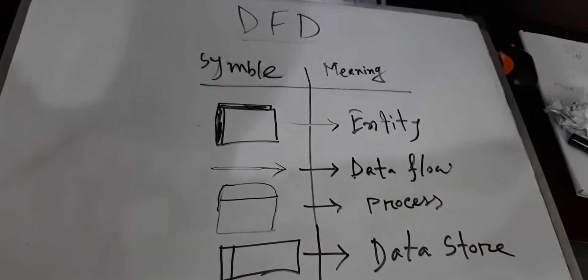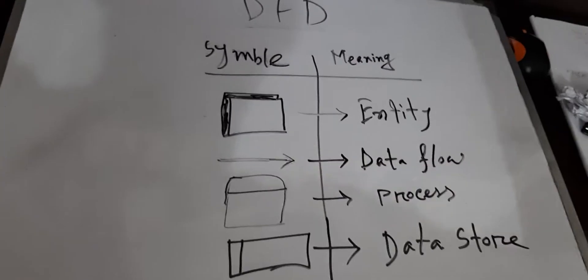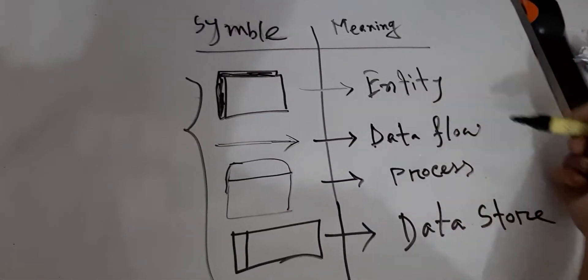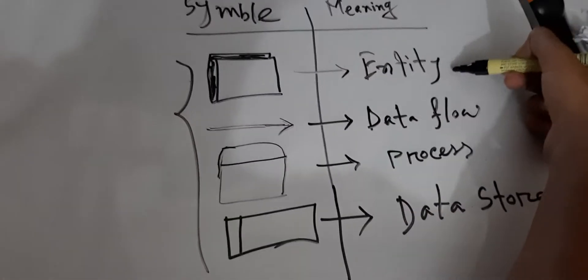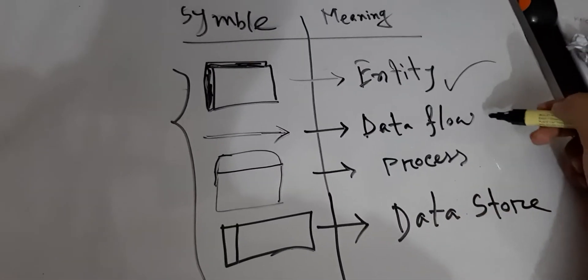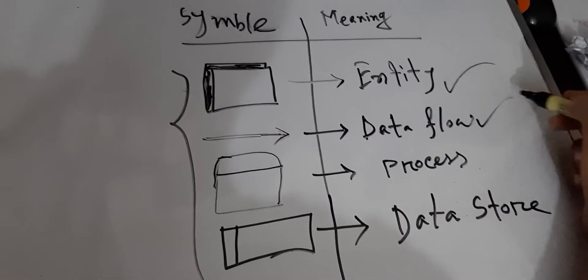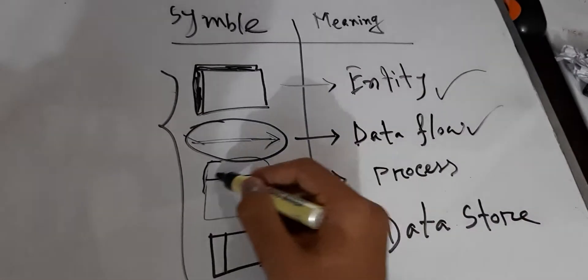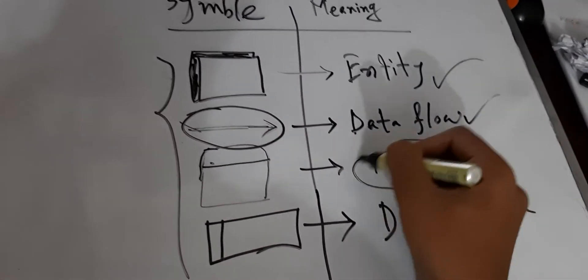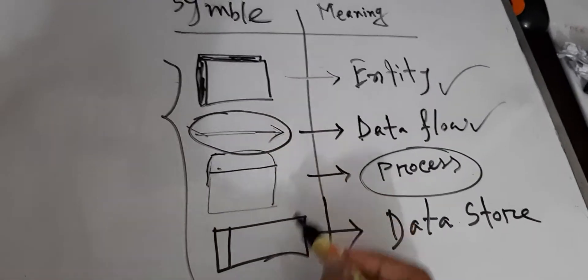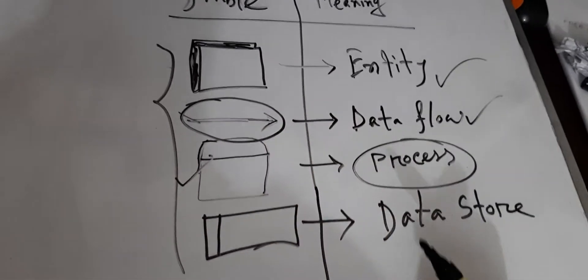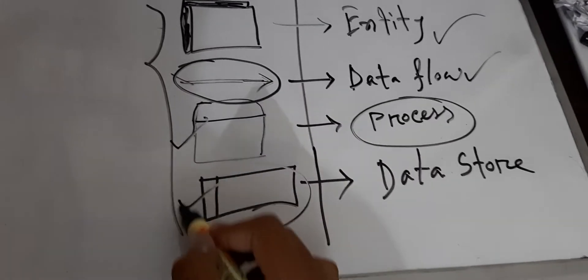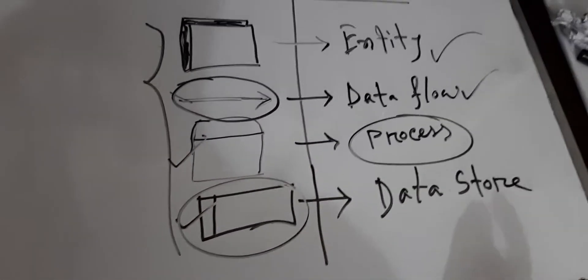All of the DFD symbols — there are four symbols with four meanings. First is Entity; second, a symbol used for data flow; third, Process — a symbol used for any process or system action; and last of all, this is the Data Store symbol.